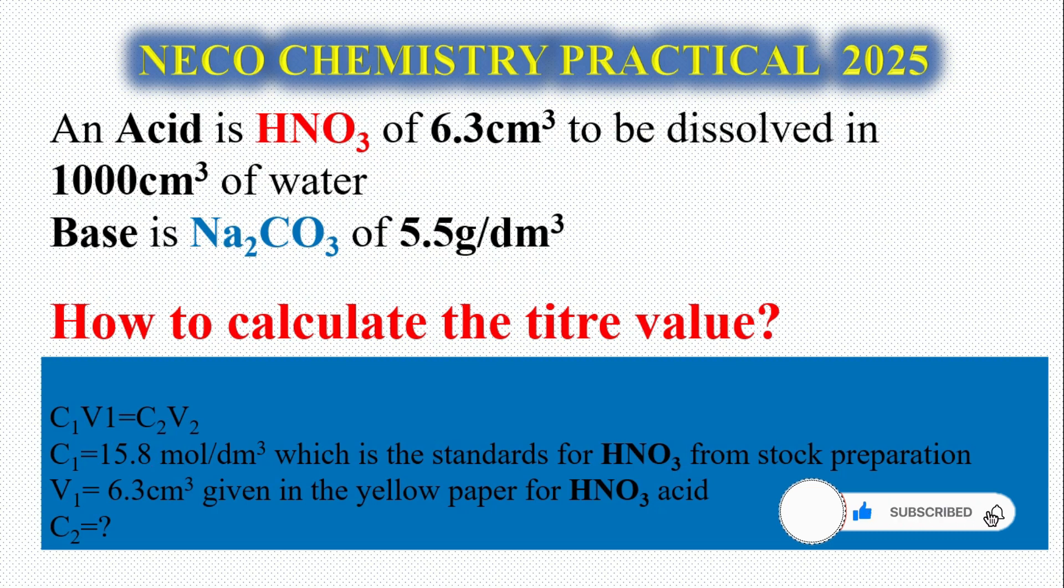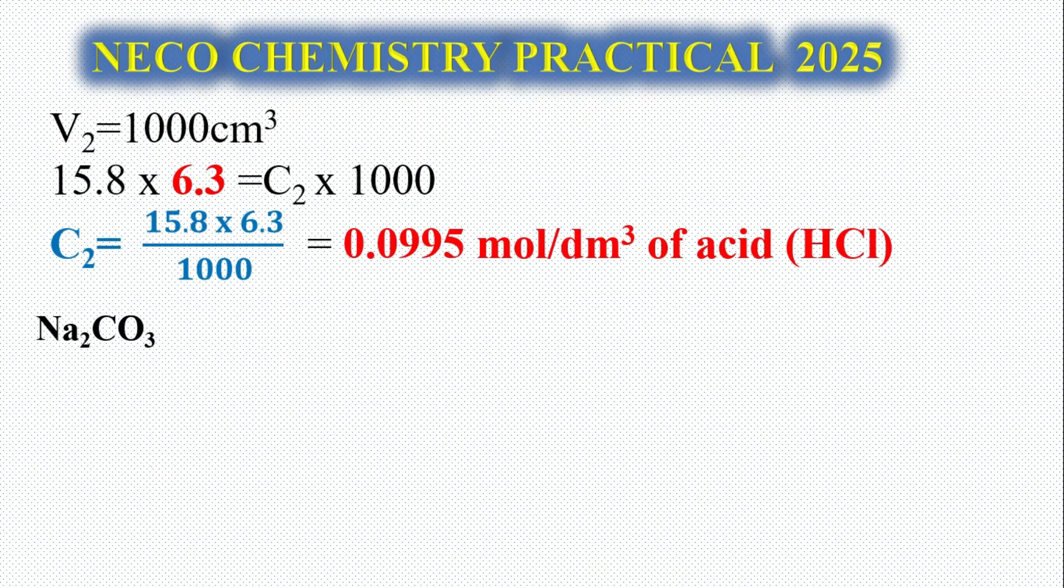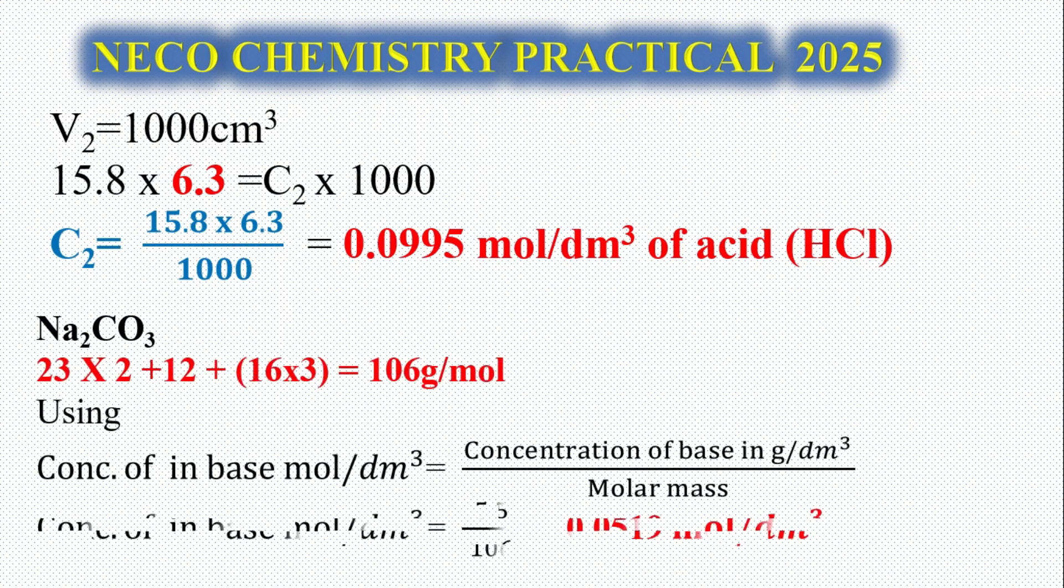We have our dilution factor, you can see the dilution factor there, that's C1V1 equals C2V2. We have our C1 from the stock calculation of HNO3 to be 15.8 and our V1 to be 6.3, and we are looking for C2. Our final volume V2 is 1000. When you substitute correctly, we are going to have 0.0995 mol per dm³ of the acid HNO3.